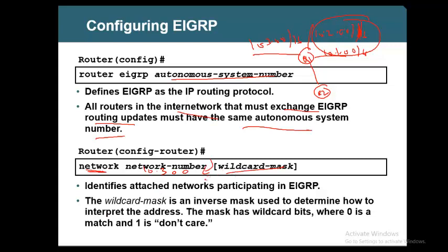If you don't use the wildcard mask and just hit enter, it will take classful matching, meaning EIGRP will run on every interface that has 10 in the first octet — so all three networks will be advertised. But if you use the wildcard mask, you specify exactly how many bits to match, like 0.0.255.255. This means the first two octets must match — so EIGRP will only run on the interface where the first two octets match, like 10.3. We call this a wildcard mask.